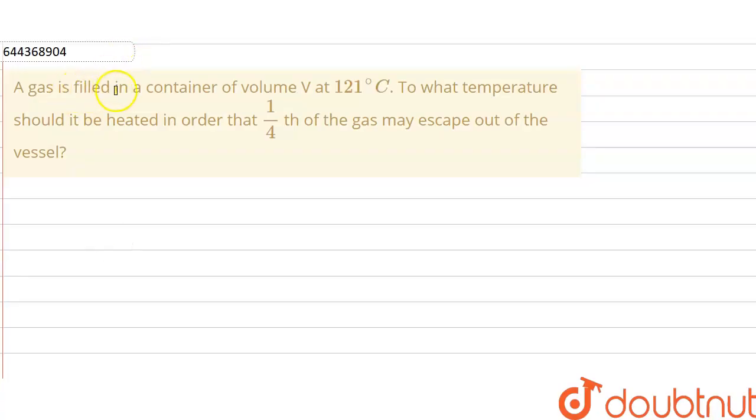So the question is a gas is filled in a container of volume V at 121 degrees Celsius. To what temperature should it be heated in order that 1 by 4th of the gas may escape out of the vessel?